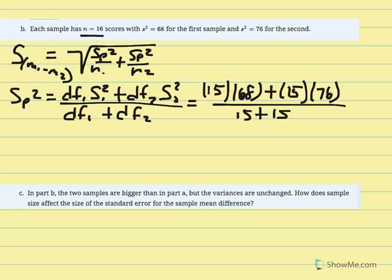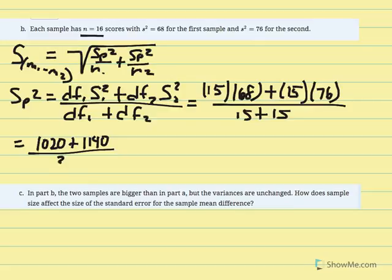Carrying out the calculation: 15 times 68 equals 1020, plus 15 times 76 equals 1140, over 15 plus 15 equals 30. So 1020 plus 1140 divided by 30 gives us 72. The pooled variance is again equal to 72.